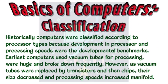Basics of Computers Classification. Historically, computers were classified according to processor types because development in processor and processing speeds were the developmental benchmarks. Earliest computers used vacuum tubes for processing, were huge and broke down frequently. However, as vacuum tubes were replaced by transistors and then chips, their size decreased and processing speeds increased manifold.